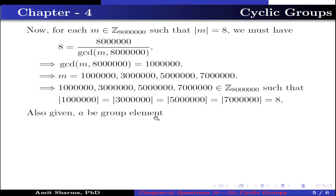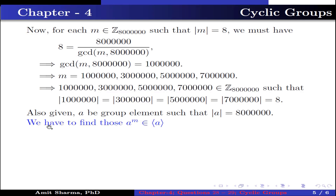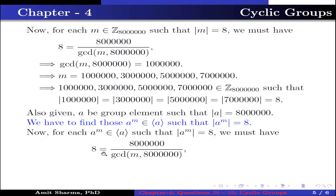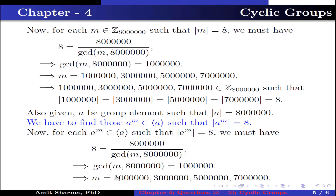Now, also given a is a group element such that the order of a is 800000. We have to find those elements a to the power m in the group generated by a such that the order of a to the power m equals 8. We must have 8 equals 800000 divided by gcd(m, 800000). This implies gcd(m, 800000) should equal 100000. This further implies m should be 100000, 300000, 500000, and 700000.